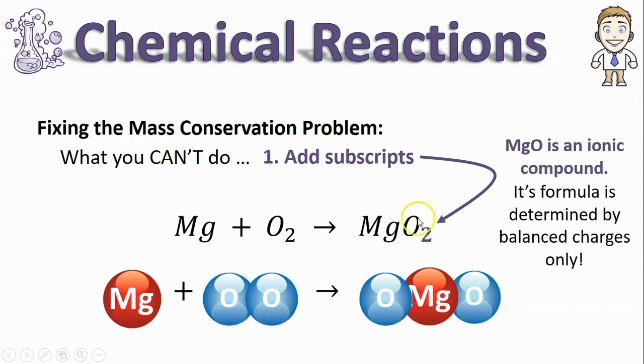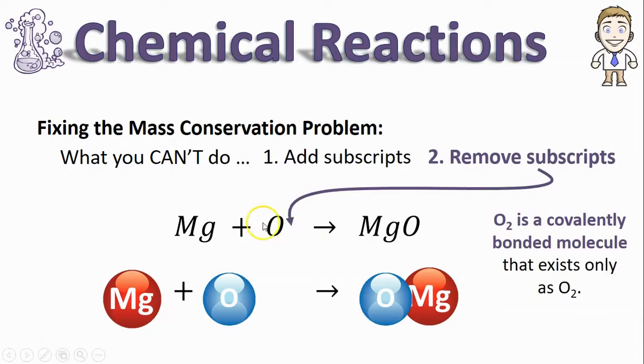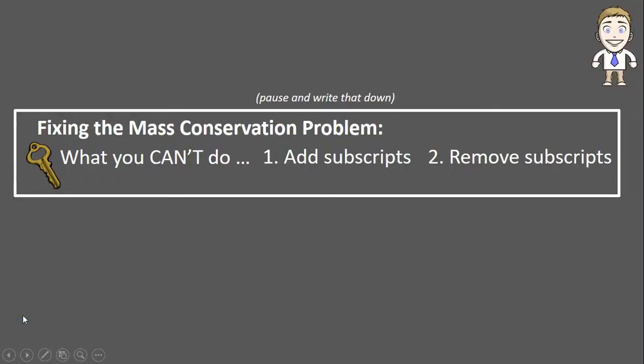Mg is a plus two, oxygen is a minus two. They balance with just one atom apiece. You can't add in a second one. Another thing you can't do is take subscripts away. If it was just Mg plus O then it would work because there's one oxygen on each side, but O2 is a covalently bonded molecule and it exists in nature as O2 so you have to write it that way. Take a moment to note the things that you can't do to fix this problem.